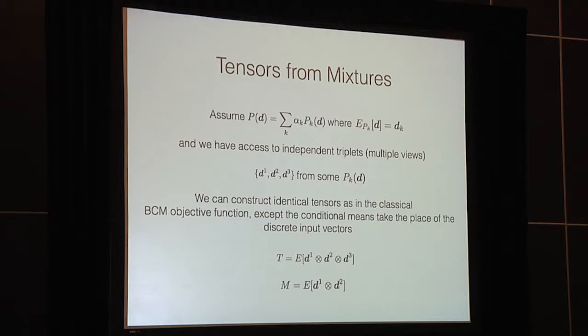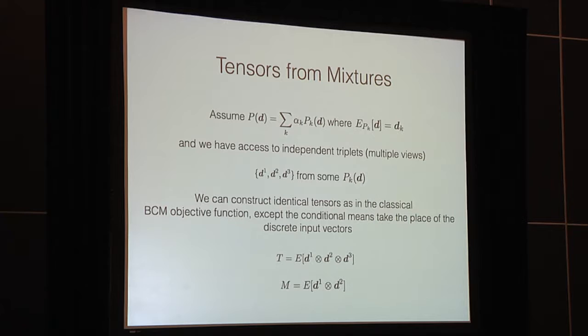We also assume access to independent triplets drawn from these distributions: we choose one conditional distribution and sample at least three times from it. We don't necessarily know which mixture our data comes from, but we know these three data points come from the same distribution. Under this assumption, we can construct identical tensors as in the classical BCM objective function, except the class conditional means take the place of discrete input vectors. So tensors T and M are identical to those in the classical BCM rule, except now the input data comes from this much richer class.